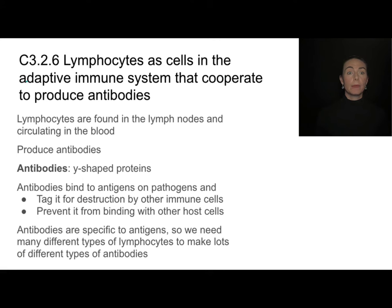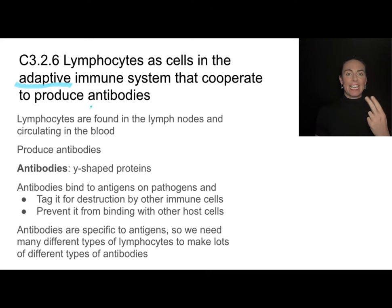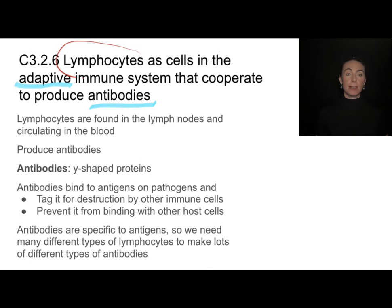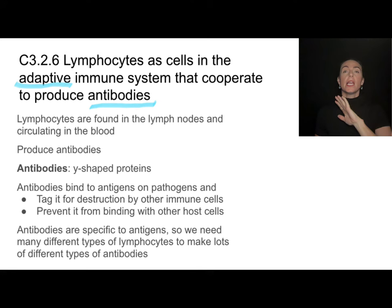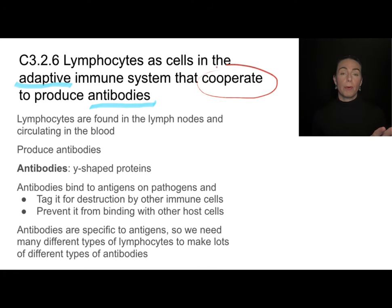When it comes to adaptive immunity, what we want to associate it with is antibodies — 'A' for adaptive, 'A' for antibodies — and those come from lymphocytes. There are lots of different types of cells involved: T cells, B cells, plasma cells, memory cells — a whole system of cells that have to cooperate in order to produce those antibodies.